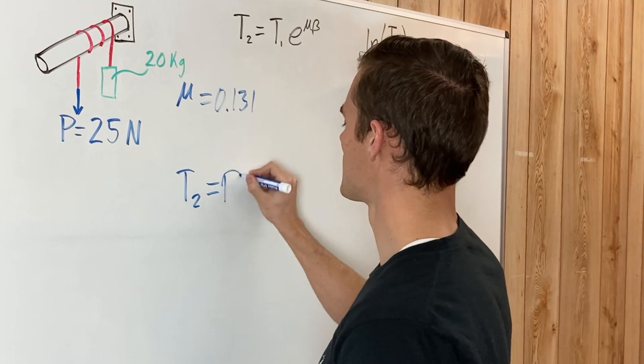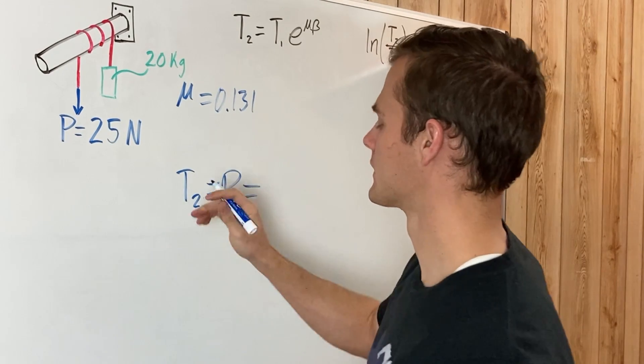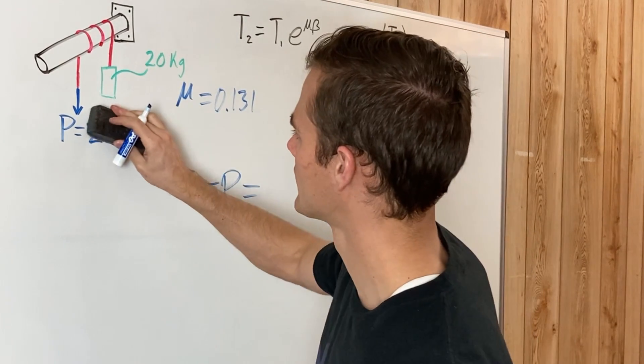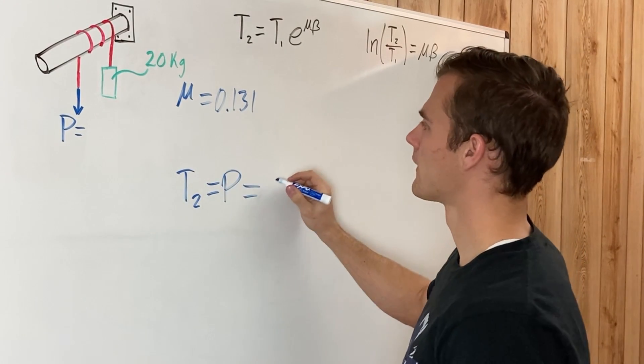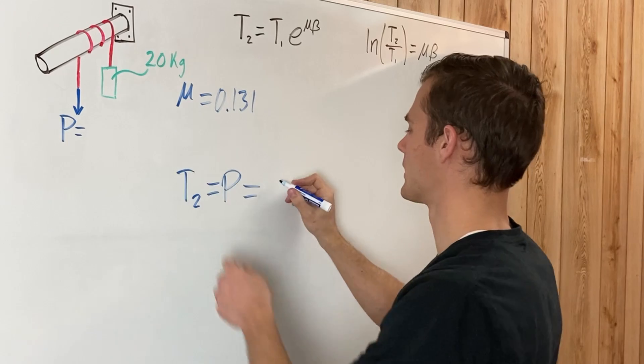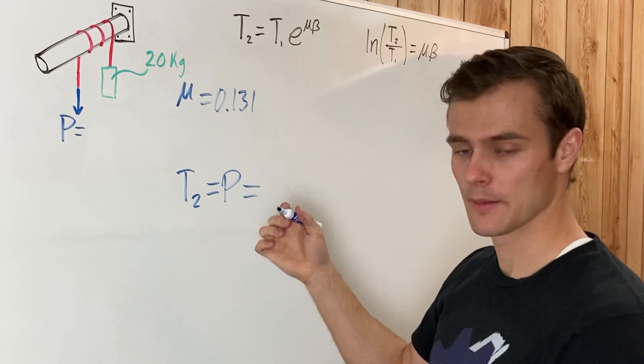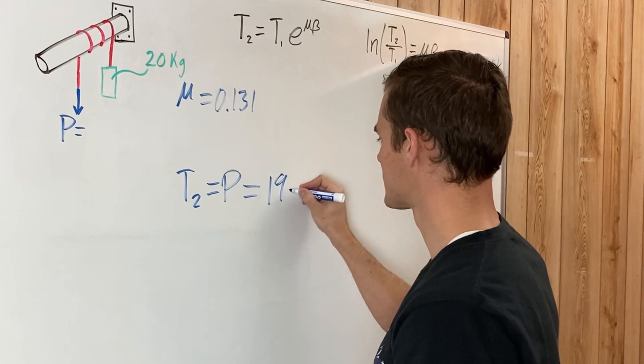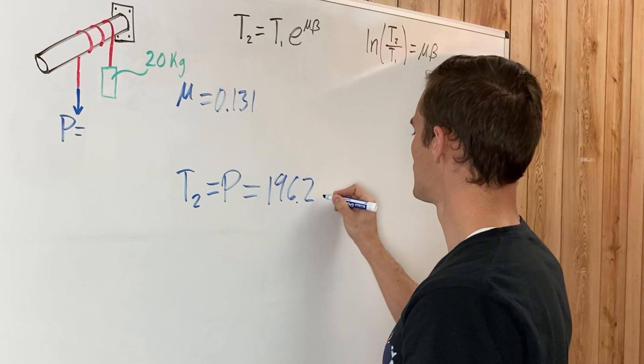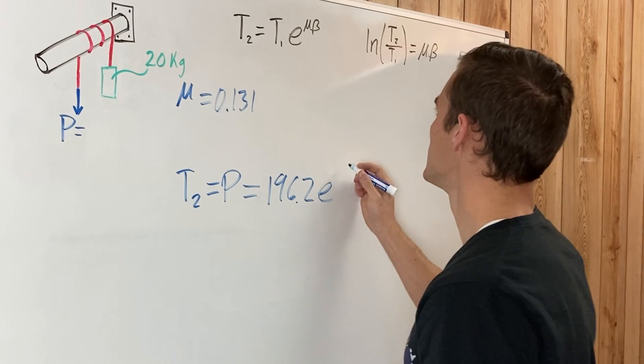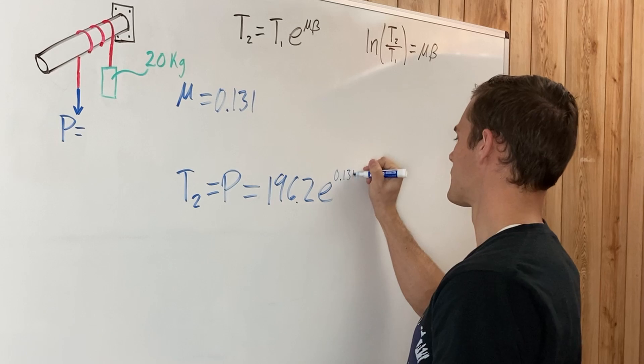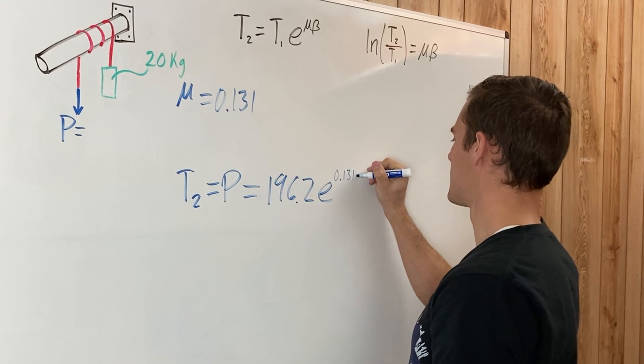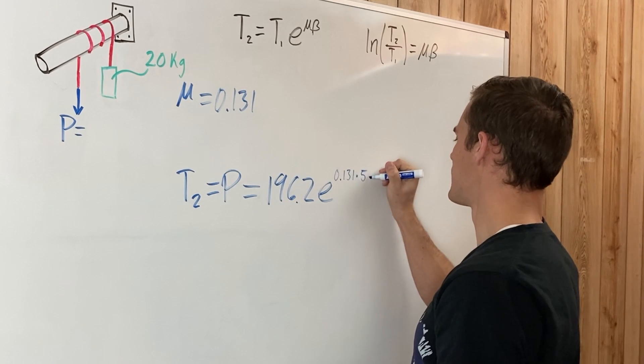That is going to equal T1, which this time is going to be the 20 times by 9.81, which was 196.2, multiplied by E to the 0.131, multiplied by 5 pi.